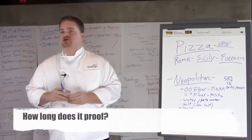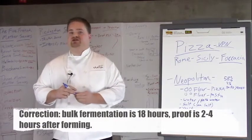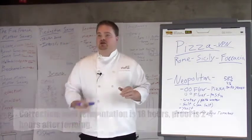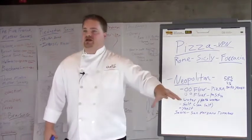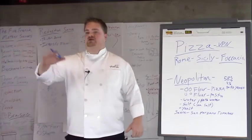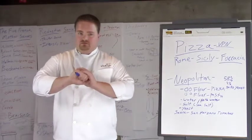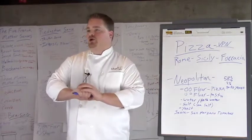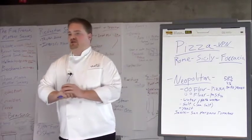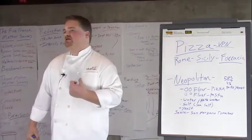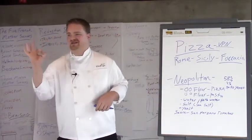The proof is 18 hours for bulk fermentation and anywhere from 2 to 6 hours for the final proof. Some guys will slow down fermentation through refrigeration. Others do a triple fermentation process where they knock it down twice. I find it's hard to get a puffy cornicione around the edge if you do that because the yeast gets very tired. Basically: bulk fermentation, punch it down, reform, bulk ferment a second time, punch down, divide, then proof again.